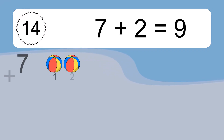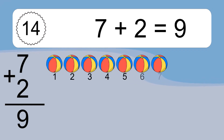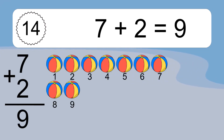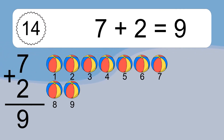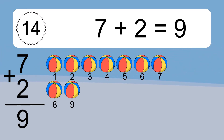7 plus 2 equals what? 7 plus 2 equals 9. Let's count it: 1, 2, 3, 4, 5, 6, 7, 8, 9.